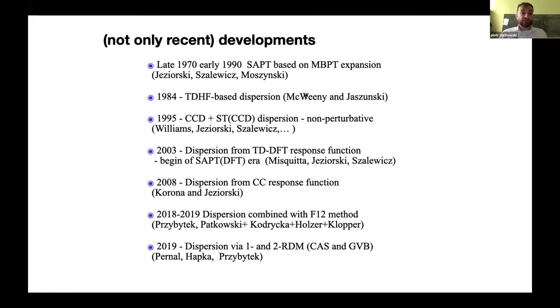So, there was some formulation based on linear response theory by McWeeny and Jeziorski. That was in 1984. Also, the Warsaw Group, since the many-body perturbation theory was giving somewhat inaccurate results in some cases, developed methods to account for dispersion more accurately. And this method was based on a coupled-cluster double ansatz. That was done in mid-1995.